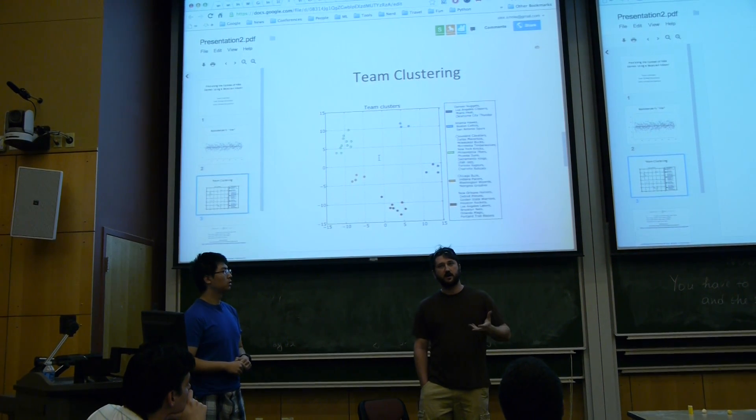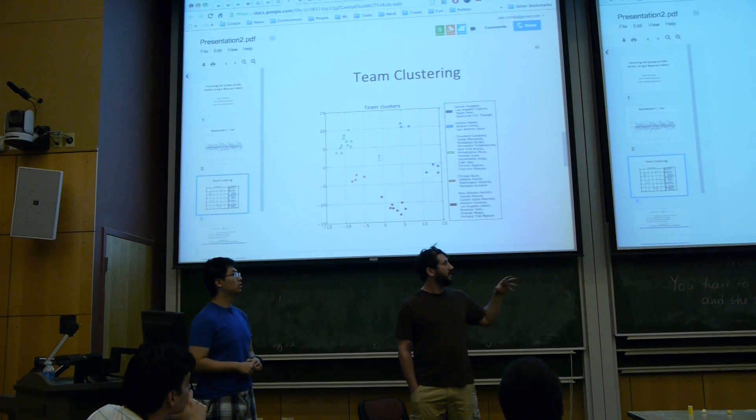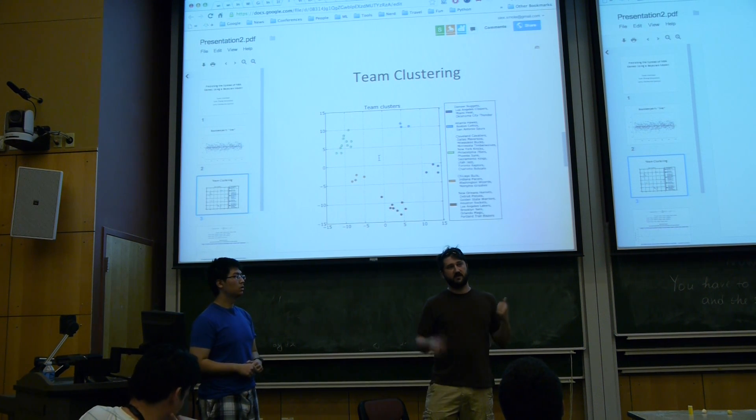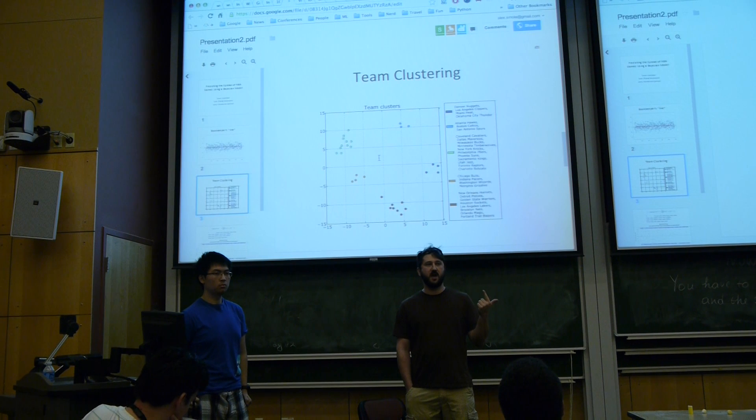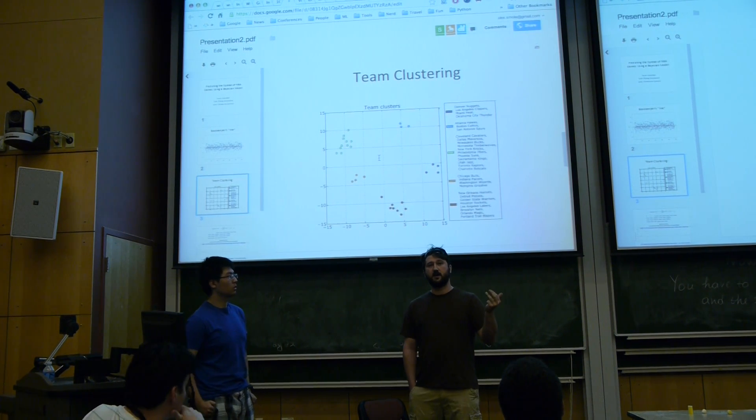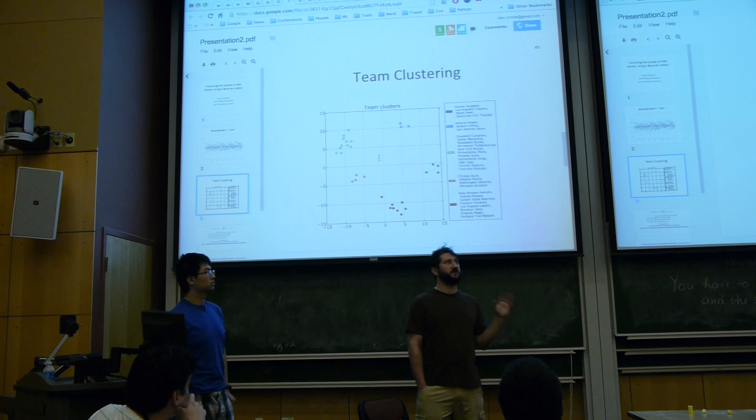So we broke these teams up into clusters based on what are called four factors. They basically have to do with how well the teams shoot, how well they rebound, how many turnovers they have, and their free throws.